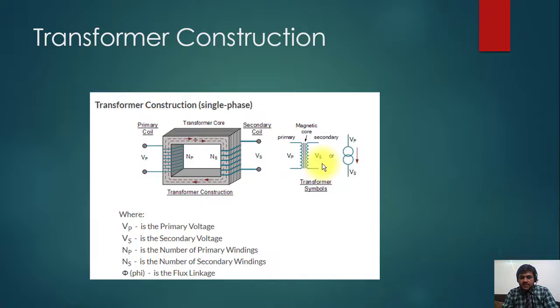VS is secondary supply voltage. This is another symbol of transformer which you will see in single line diagrams. This ring is shown as VP and primary and this another ring is shown as secondary. So these are the transformer symbols that you will see in different diagrams and drawings.